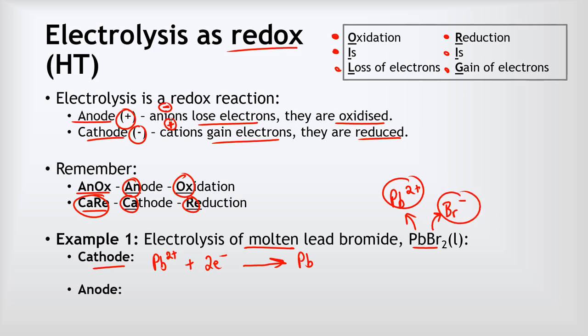At the anode, our bromide anions go there and oxidation takes place. We show oxidation by placing the electron on the right: Br⁻ → Br + e⁻. More correctly, bromine forms Br2 molecules, so the balanced equation is: 2Br⁻ → Br2 + 2e⁻. For a GCSE exam the simpler form will normally get full marks, but the balanced version with Br2 and two electrons is more correct.